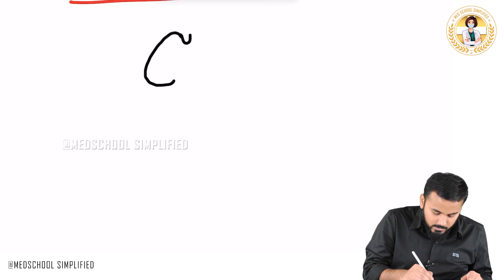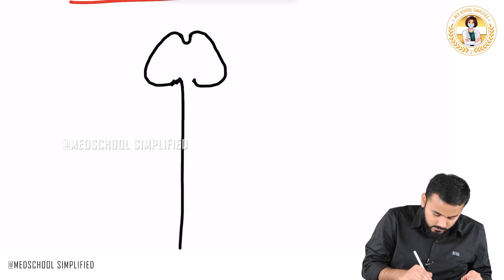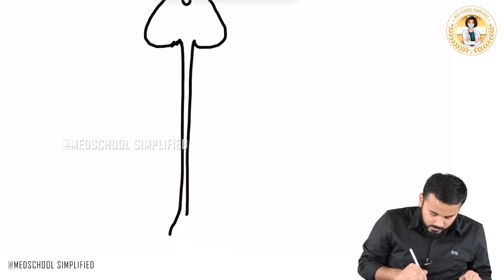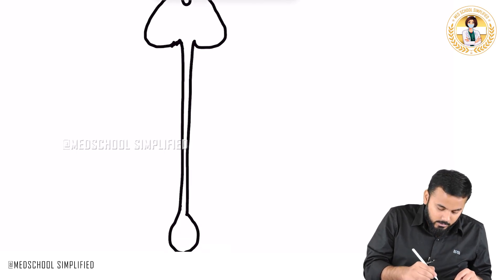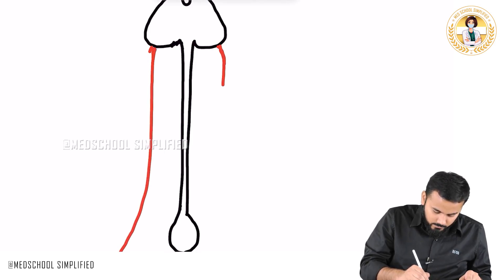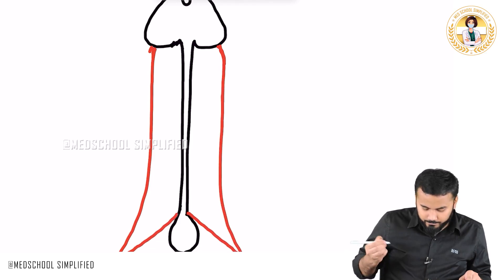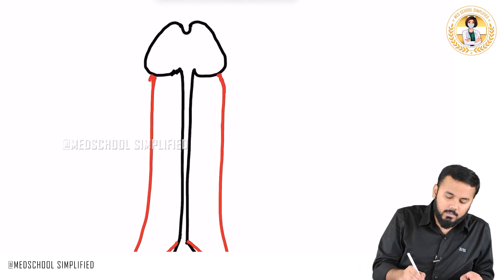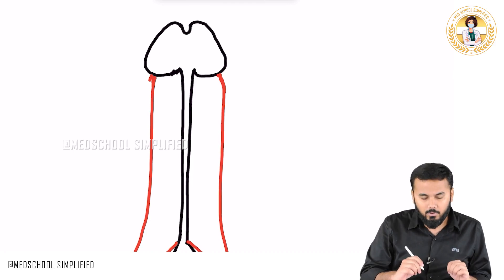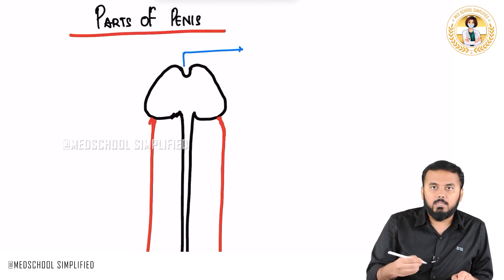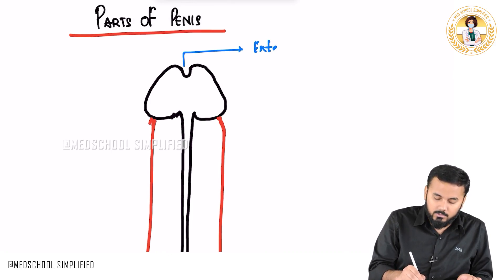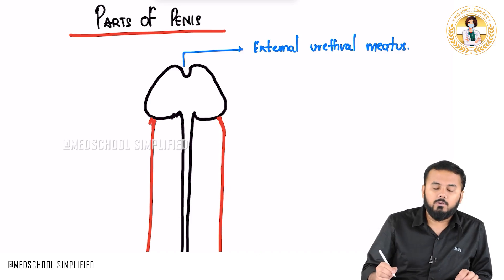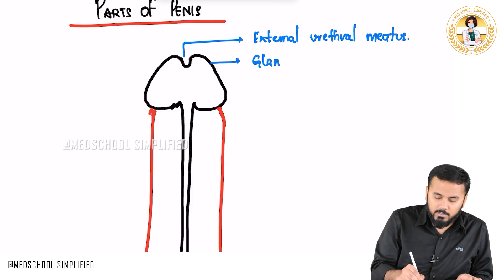This part which I'm drawing right now is your glans penis. The end is having a bulbous part. This part over here is the urethral meatus — the external opening — so this is called the external urethral meatus.